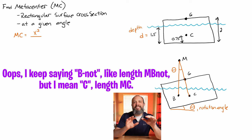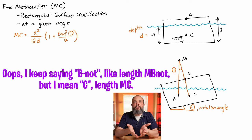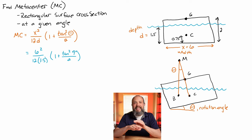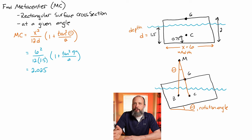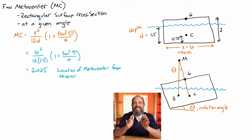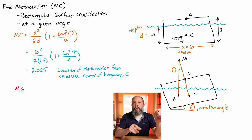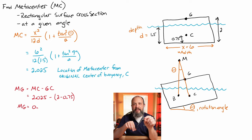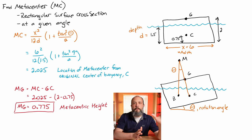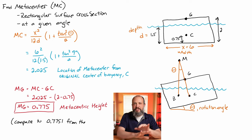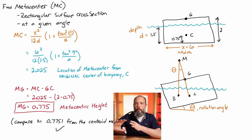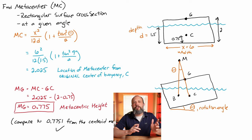We call this mb0 — the distance from the metacenter to the original flat center of buoyancy. All we need is the width of the rectangle, the submerged depth, and the rotation angle. Plugging in for this problem: 6-meter width, 1.5-meter original depth, and 9-degree rotation angle, we get a distance of 2.025 meters along the rotated center line from the metacenter to the original center of buoyancy. Subtracting the distance from the original center of buoyancy to the original center of gravity — 1.25 — we get the metacentric height MG of 0.775 meters. That is the exact same distance we had using the original centroid trapezoid method. Again, positive MG — positive metacentric height — means stable. The center of buoyancy has shifted far enough over to the side that its upward force will cause the boat to right itself.